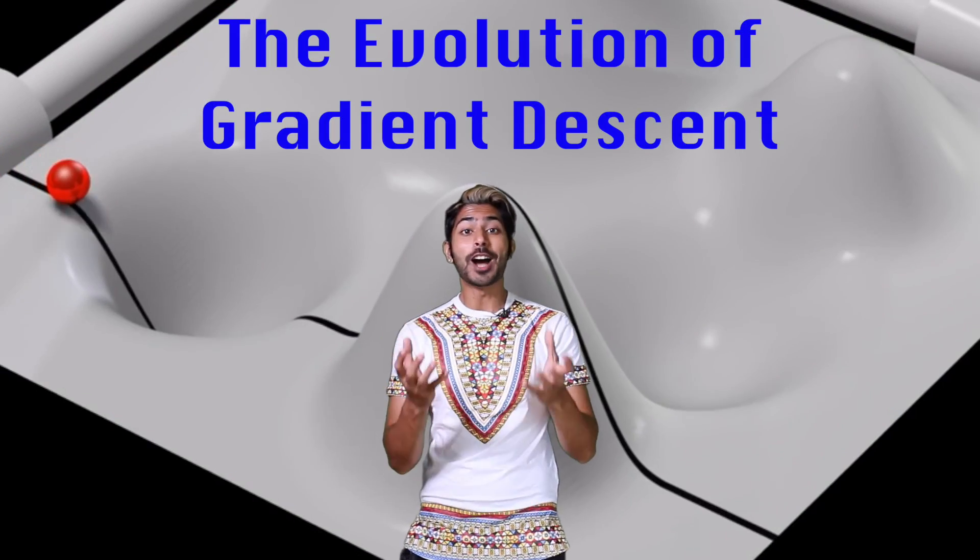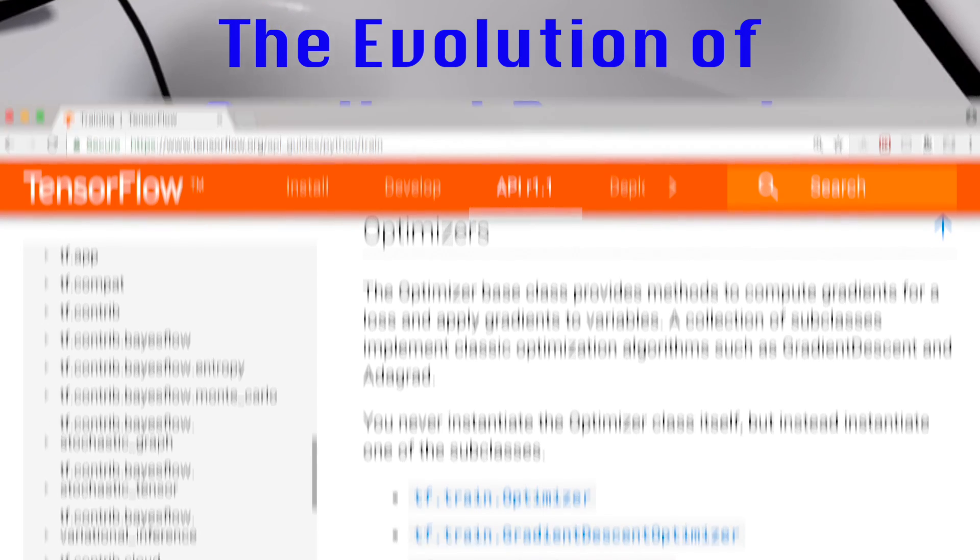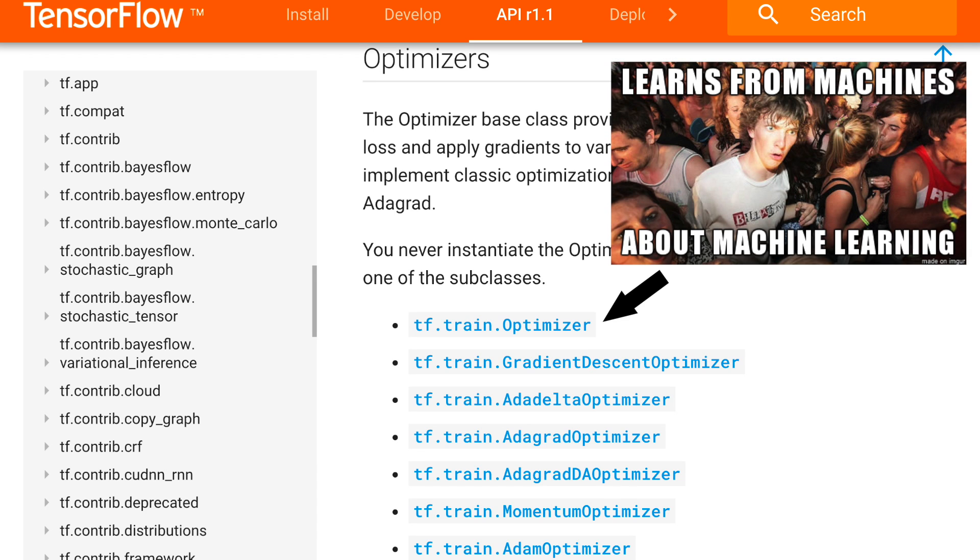Hello world, it's Siraj, and let's talk about how gradient descent has evolved over the years. TensorFlow gives us quite a few options for picking a gradient descent-based optimization strategy. This is what causes our neural network to actually learn from data, but it's not immediately clear how we should pick one.